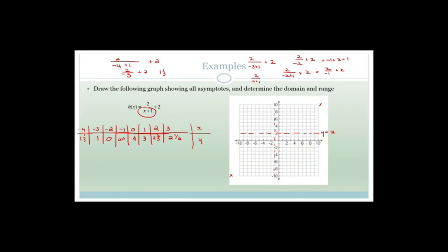Now we need to plot this. When x is minus four, y is one and a third — it's going to be over here somewhere. When x is minus three, y is one. When x is minus two, y is zero. So basically our graph does something like that. When x is zero, y is four — you can see it cuts the y-axis. Do you see it's cutting the x-axis at minus two and cutting the y-axis at four? That's important because you can often be asked where x-cuts and y-cuts are. When x is one, y is three. When x is two, y is two and two-thirds. When x is three, y is two and a half. It does that, and it never touches or crosses the asymptote.